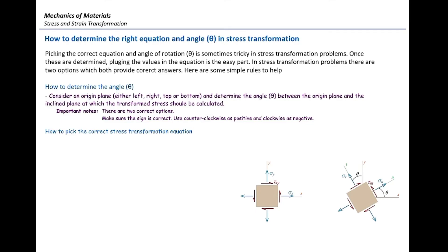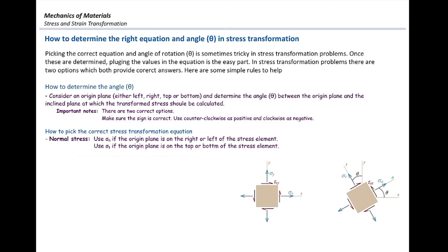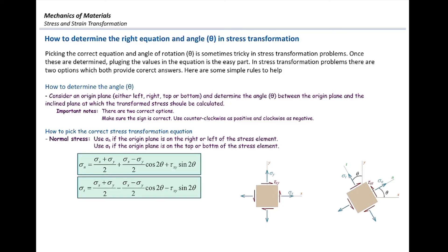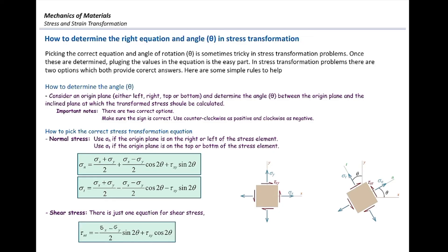The second step is picking the right stress transformation equation. If we start from the right or left surface, sigma_n is used for stress transformation. If we have started from the top or bottom, we use sigma_t. For determining shear stress, there is just one equation, so it doesn't matter which surface we start from. That just identifies the right theta to get the magnitude of normal and shear stresses.